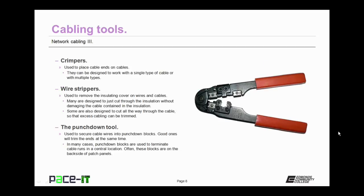So you need to find that balance point between spending too much money and not spending enough money to become a really efficient technician. Now let's move on to the tools themselves, and we'll begin with crimpers. Crimpers are used to place cable ends on cables. They can be designed to work with a single type of cable, as in twisted pair, or with multiple types of cable. I've seen some crimpers that have been able to work with RJ11s, RJ45s, and with a coaxial F connector.